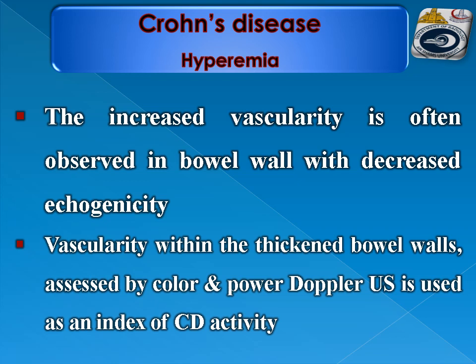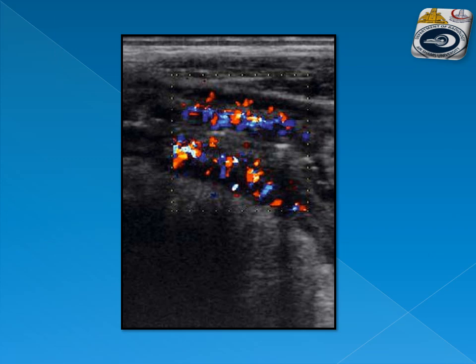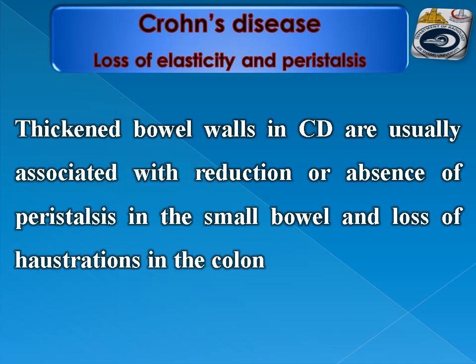Hyperemia: increased vascularity is often observed in bowel walls with decreased echogenicity. Vascularity within thickened bowel walls, assessed by color and power Doppler ultrasound, is used as an index of Crohn's disease activity. Vascularity is evaluated using a semi-quantitative scoring system categorized as mild, moderate, and severe, or by using Doppler indices such as resistive index from vessels within the bowel wall. Thickened bowel walls in Crohn's disease are usually associated with reduction or absence of peristalsis in the small bowel and loss of haustra in the colon.